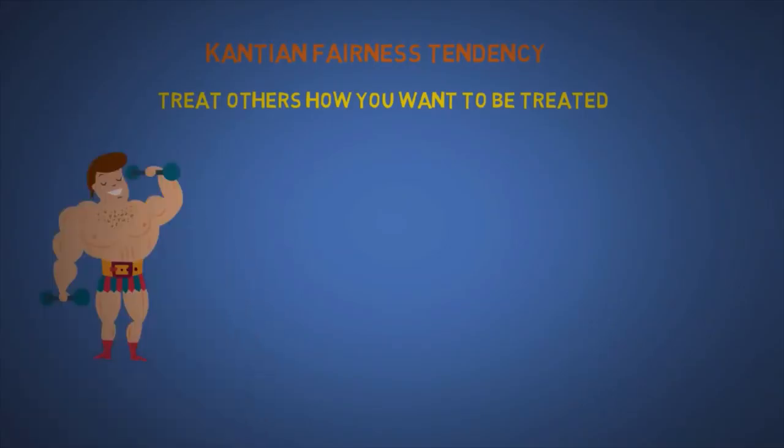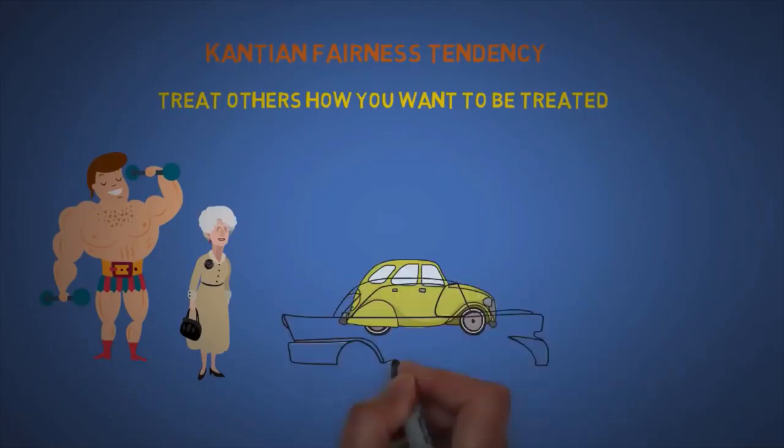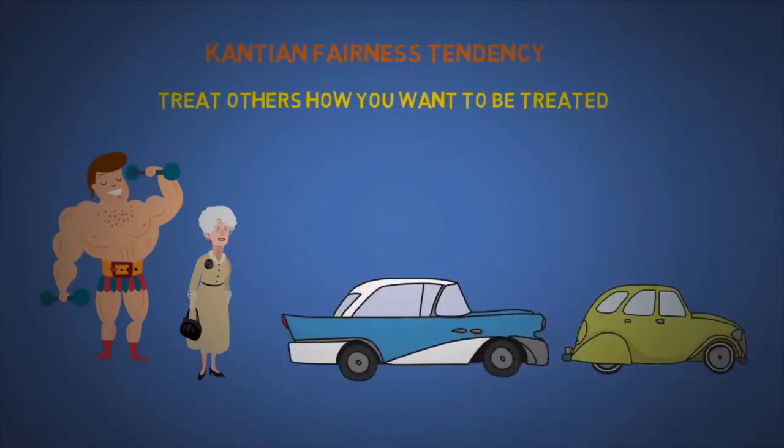The seventh is Kantian fairness tendency, which is pretty much the golden rule. That is to treat others how you want to be treated. It's the bias that makes a 300 pound big guy willing to line up behind an old lady and follow the first come first serve rule. Another example is letting in other drivers on the freeway believing that they will reciprocate in the future. So think about situations where you get mad at strangers for not sharing who don't even owe you anything.